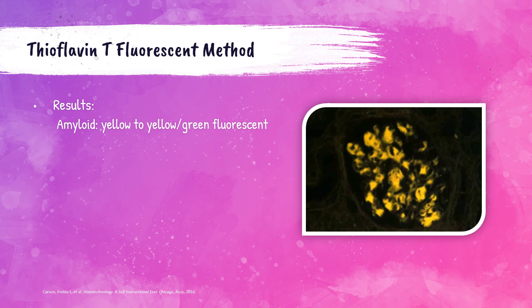Amyloid will appear yellow to yellow-green fluorescent under fluorescent microscopy when stained with the thioflavin T fluorescent stain. The photo shown here is a kidney section stained using this method, where the amyloid deposits are clearly visible as a yellow color throughout the kidney.